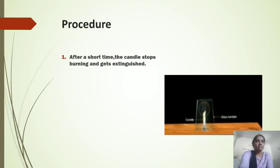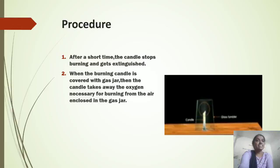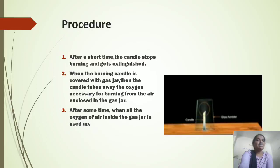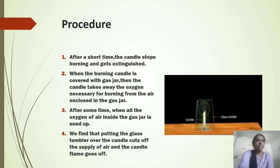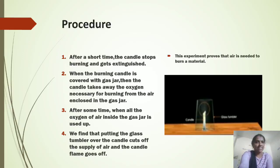The candle continues to burn for some time when you cover it with the glass tumbler. After a short time, the candle stops burning and gets extinguished. When the burning candle is covered with a gas jar, the candle uses the oxygen necessary for burning from the air enclosed in the gas jar. After some time, when all the oxygen inside the gas jar is used up, the candle stops burning. We find that putting the glass tumbler over the candle cuts off the supply of air and the candle flame goes out. This experiment proves that air is needed to burn a material.